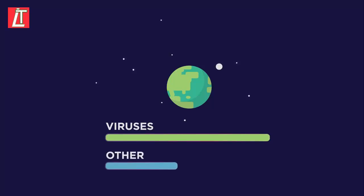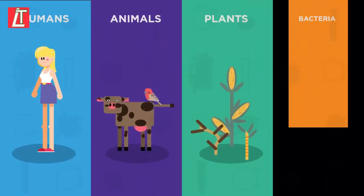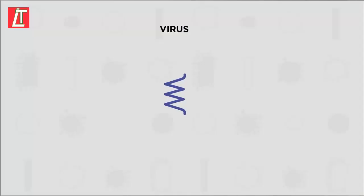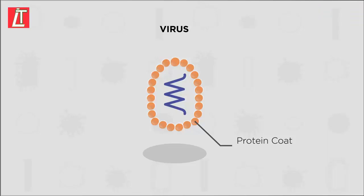Viruses can infect humans or animals, plants, and even bacteria. Viruses are very simple. They are made up of a protein coat surrounding a strand of genetic material. The genetic material can either be DNA or RNA.